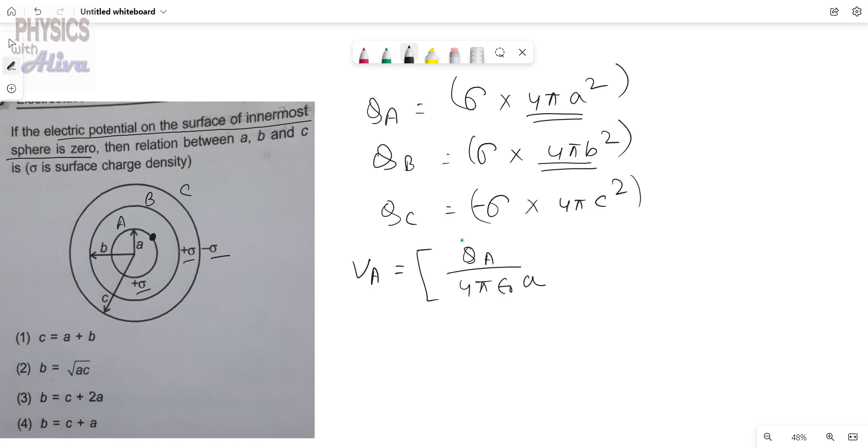And this is the inside point for the sphere B. So Q_B divided by 4πε₀B. And this is also the inside point for the C. Q_C divided by 4πε₀C.